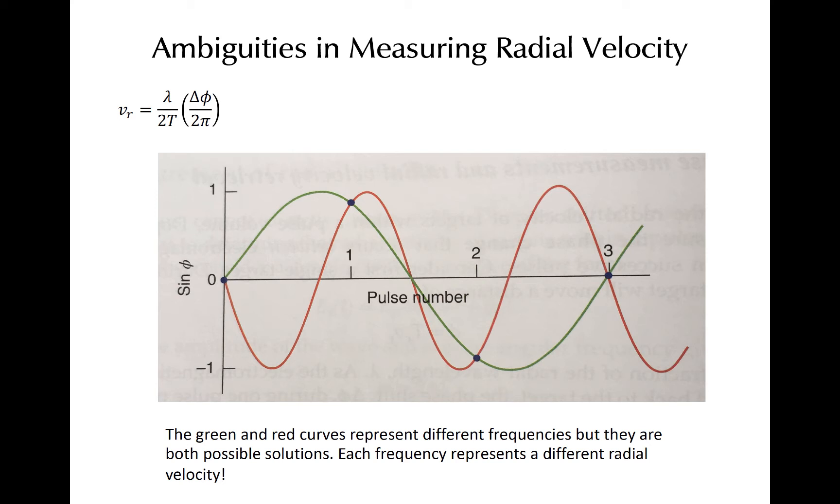Next, let's zoom in on just a few pulses, where again the blue dots represent individual phase shift measurements. The red curve is one sinusoid that connects the blue dots. However, the green curve is a sinusoid with a different frequency that also satisfies the above phase shifts. These different Doppler frequencies correspond with different Doppler velocities. In fact, infinitely many sinusoids, all with a different frequency, can satisfy the observed phase shifts.